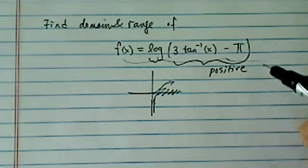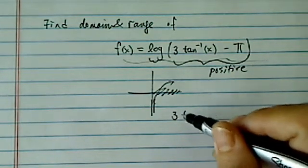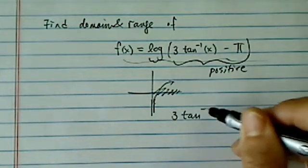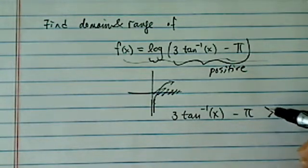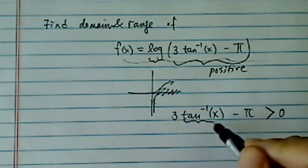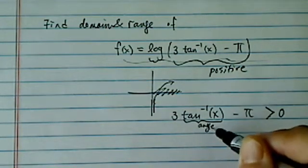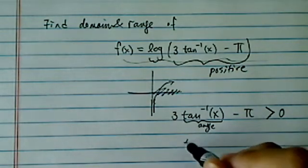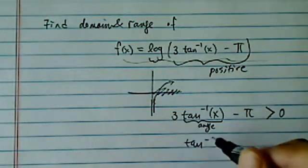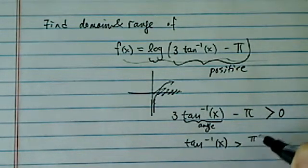It cannot be zero. So let's set that up: tangent of x minus pi has to be bigger than zero. Remember, arctangent is always an angle. So three times an angle minus pi is bigger than zero, which gives us tangent inverse of x is bigger than pi over three.